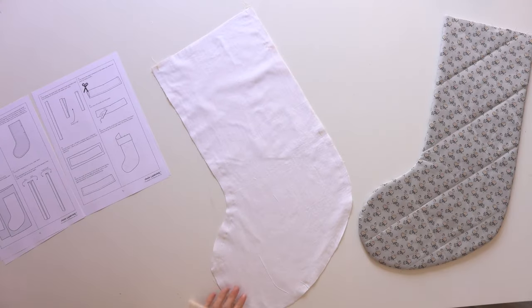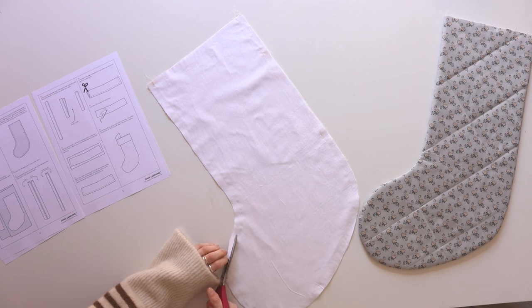As we did with the outer stocking, we're going to trim some of that seam allowance away just around the tight curve.